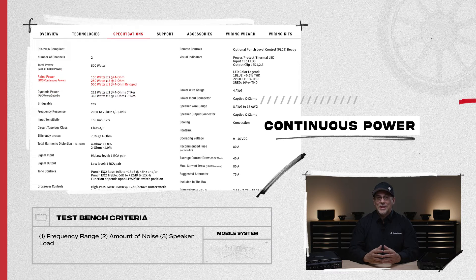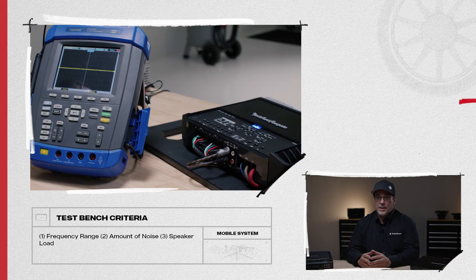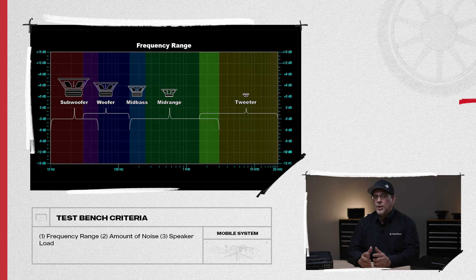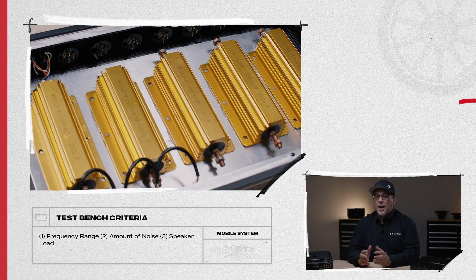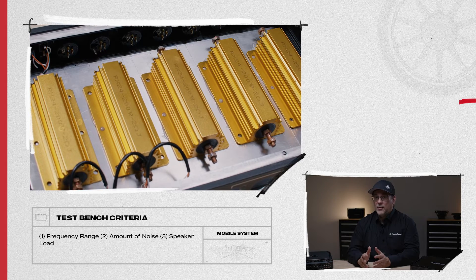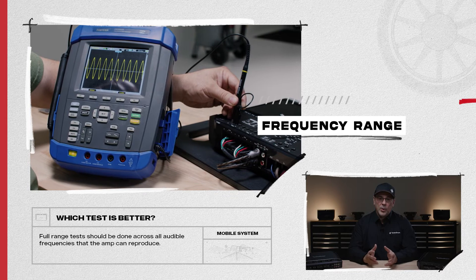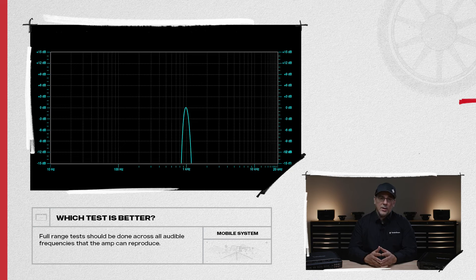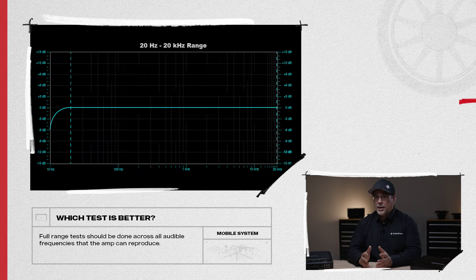Let's start with the first rating: continuous power. Continuous power is what the amplifier produces on a test bench using sine waves. We test for three things: frequency range, which is the range of music we hear from low notes to high notes; the amount of noise, which is the noise that the electronics generate inside the amplifier circuit; and the speaker load, which helps us measure the output power of the amplifier to the speaker system. Starting with frequency range, there are two common methods used: a 1 kHz tone, or a full range 20 Hz to 20 kHz signal. Typically, the 1 kHz method produces the most power because it's the easiest signal for the amplifier to reproduce, but this doesn't give you an accurate representation of the amplifier's full capability. A full range audio signal driven into all amplifier channels is better because it illustrates the amplifier's capability at all audible frequencies.